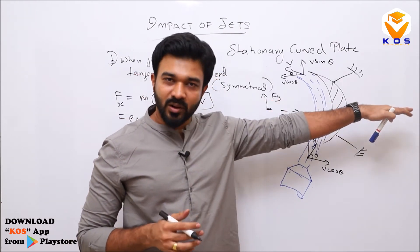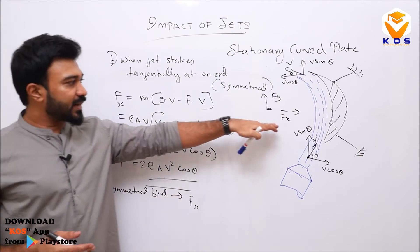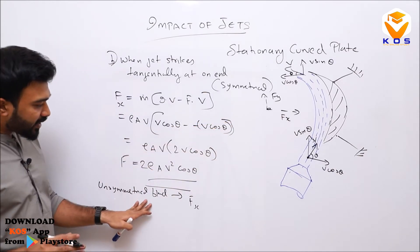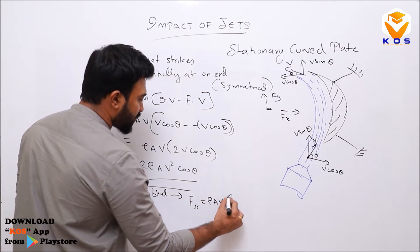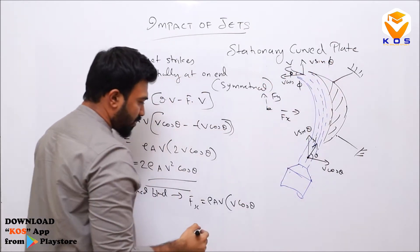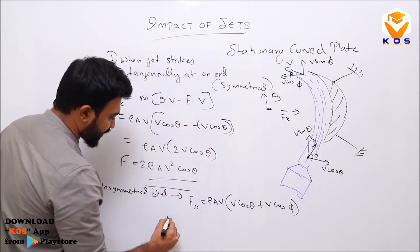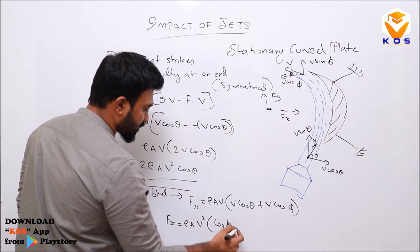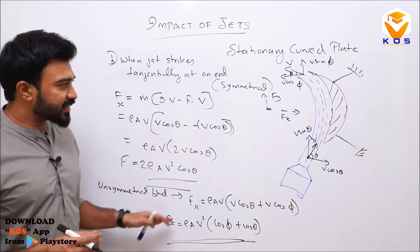For an unsymmetrical blade, the Fx component will be equal to ρAV²(cosθ + cosφ), where θ and φ are the inlet and exit blade angles respectively. This gives the horizontal force on the unsymmetrically curved blade.